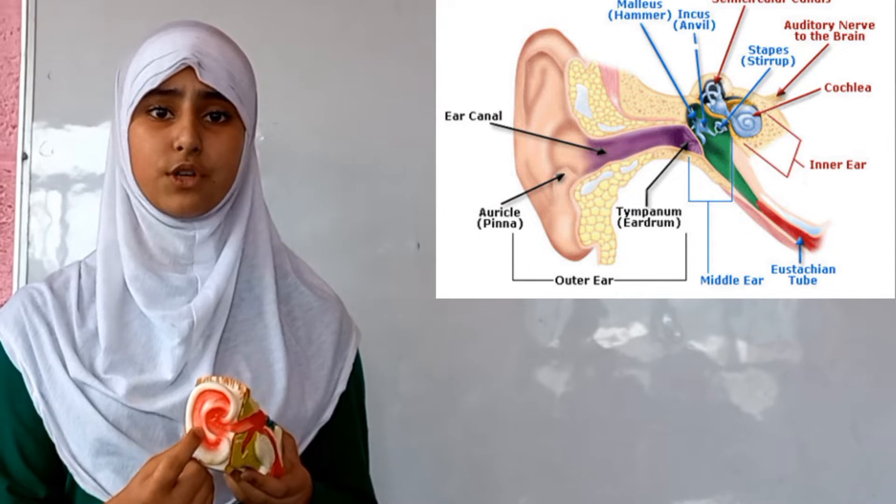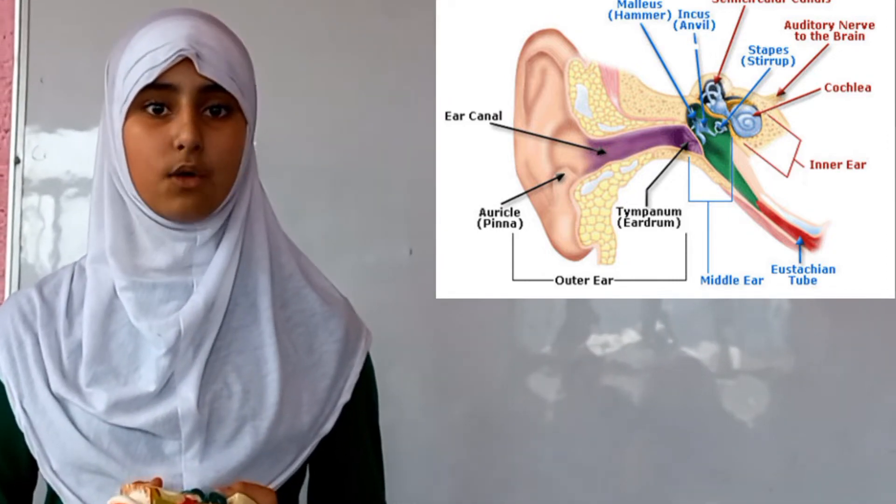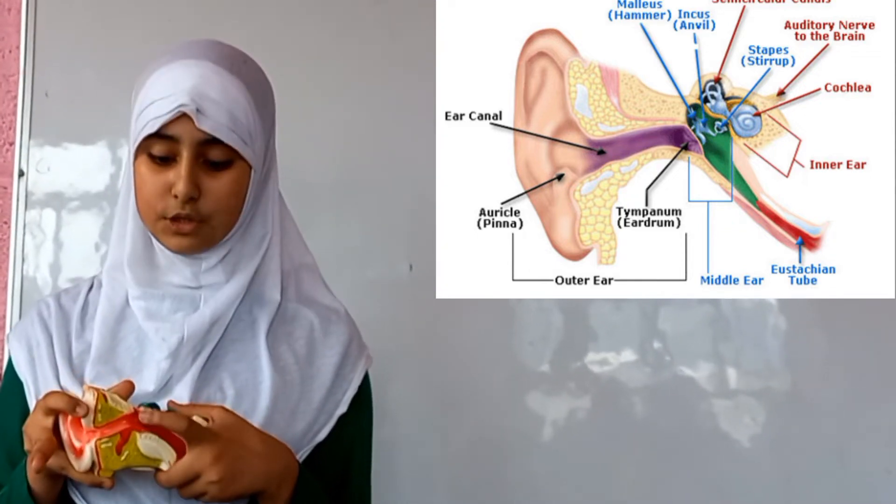Outer ear: The outer portion of our ear is known as the pinna. It collects sound from the surroundings and passes them through the ear canal to the eardrum.